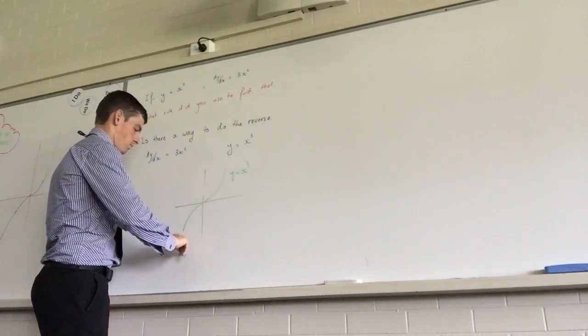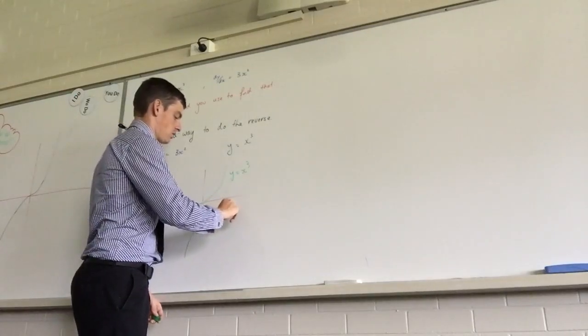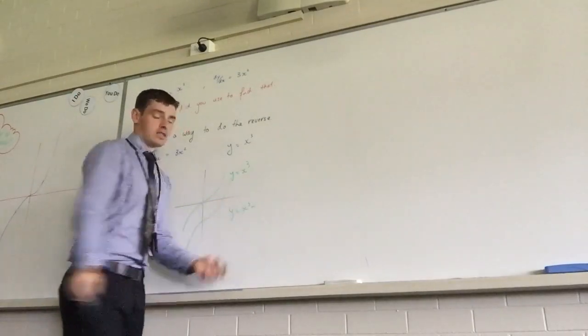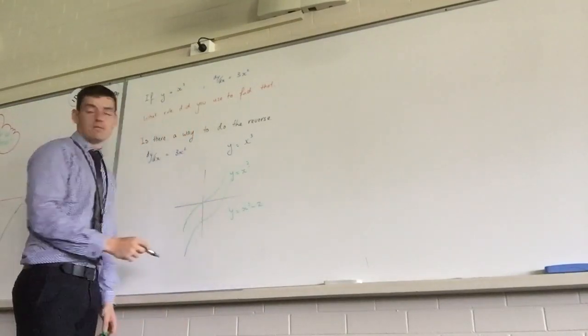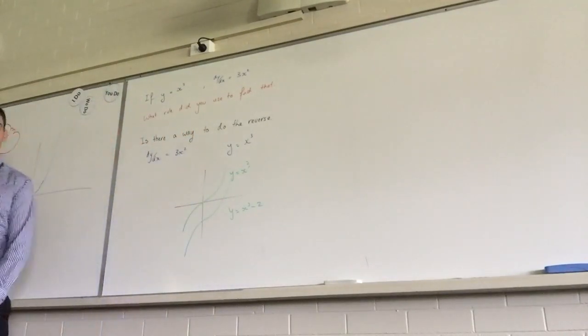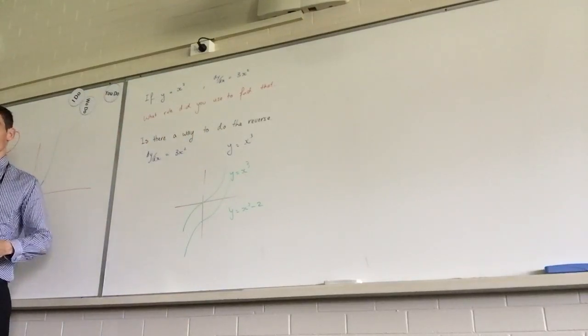What about this function here? That's y equals x cubed minus, give me the number? 2. That'll do. So that point there is? Negative 2. Okay, what's the derivative of that function? 3x squared.